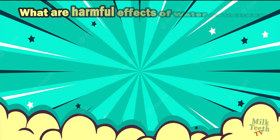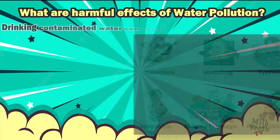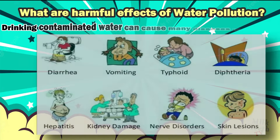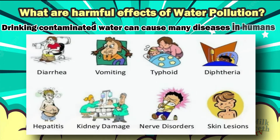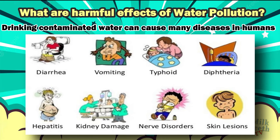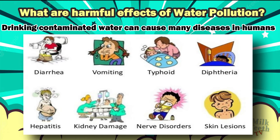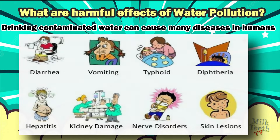What are the harmful effects of water pollution? Drinking contaminated water can cause many diseases in humans such as diarrhea, vomiting, typhoid, diphtheria, hepatitis, kidney damage, nerve disorders, and skin lesions — some of the diseases common in humans due to water pollution.